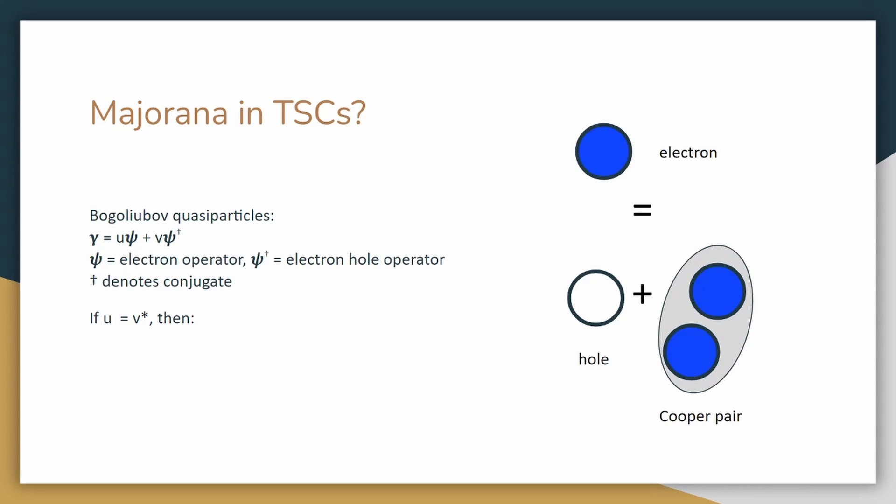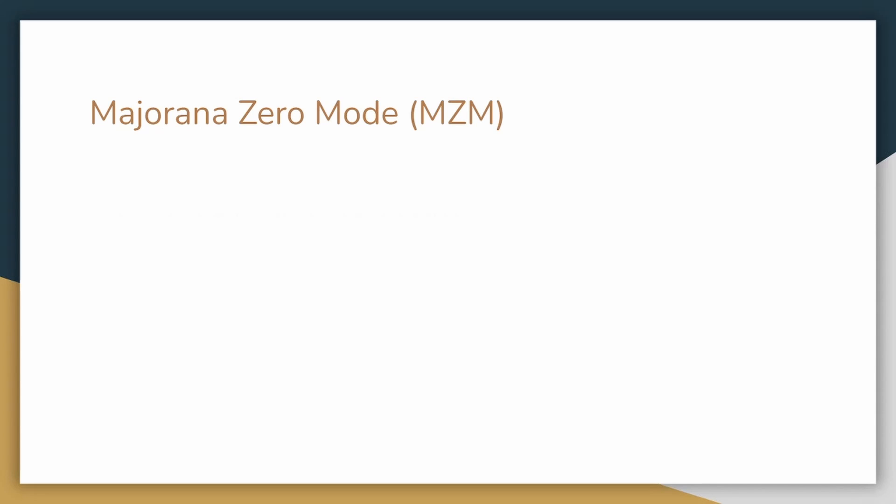we could show that the Bogoliubov particle satisfies the conditions for Majorana particles. As a result, researchers are looking for the Majorana zero mode. This is the zero energy state of the Majorana particle. It is a state where Majorana particles can remain stable and form as quasi-particles that we can use for quantum computing.